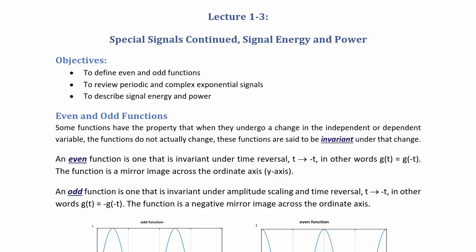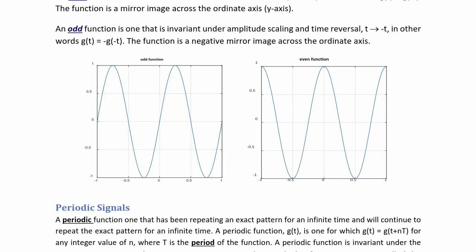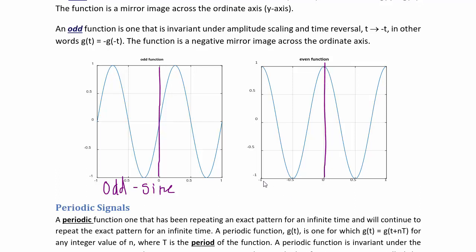Now let's examine even and odd on the following figure. We have two figures here. The one on the left — if I draw the ordinate axis down the middle, you can tell it's a negative mirror image of itself, so it's an odd function. This one is actually a sine wave. For the figure on the right, if I draw the ordinate axis down the middle, you see that it creates a mirror image of itself, so this is an even function and it's actually a cosine.